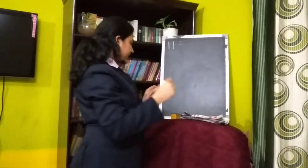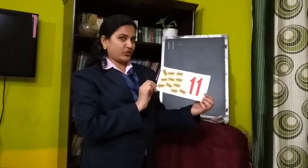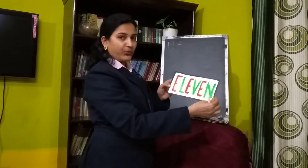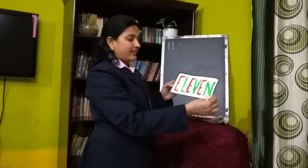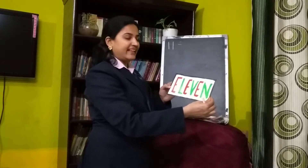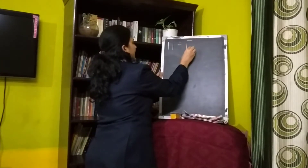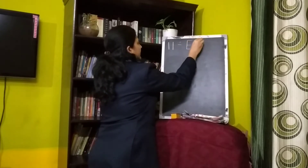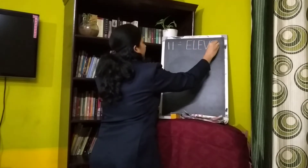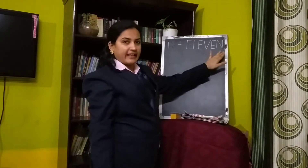11 — 1, 1 — 11. I have 11 burgers in this chart. And how do we write 11? E-L-E-V-E-N. Repeat after me: E-L-E-V-E-N. 11.